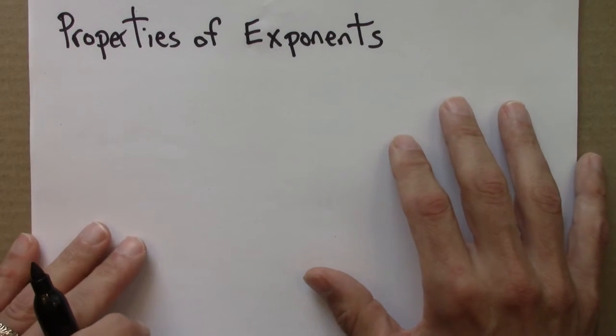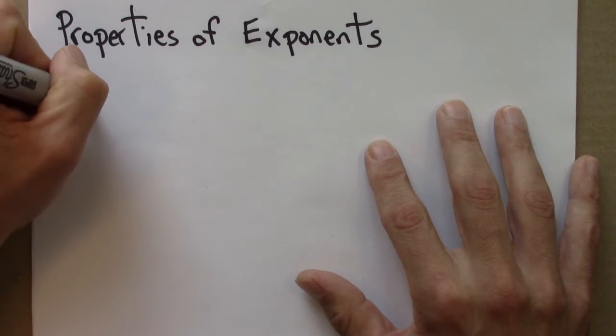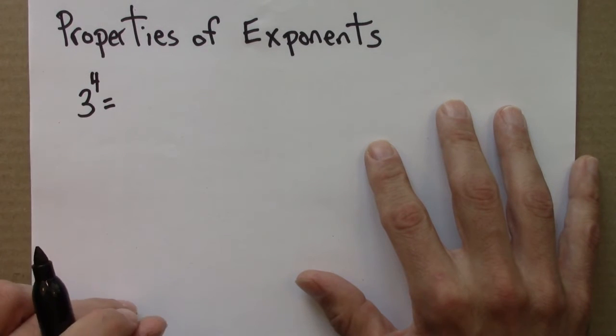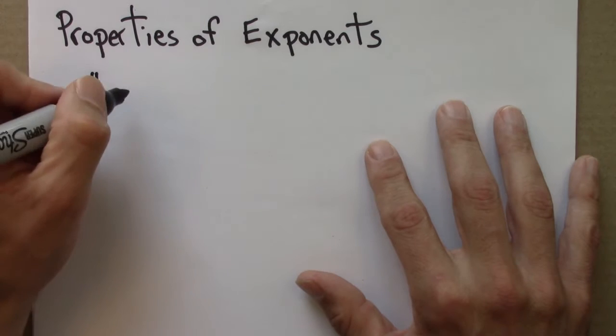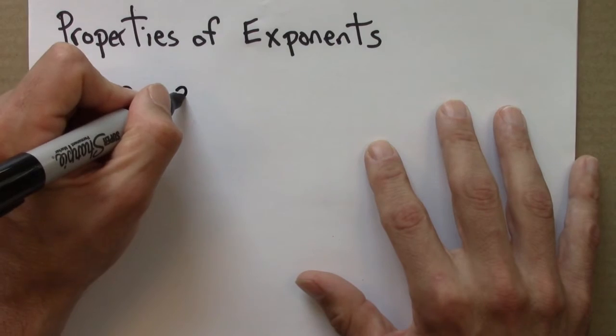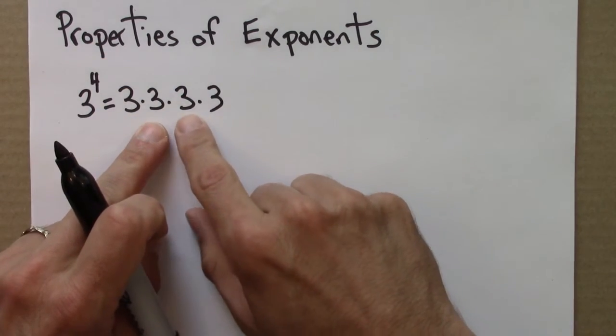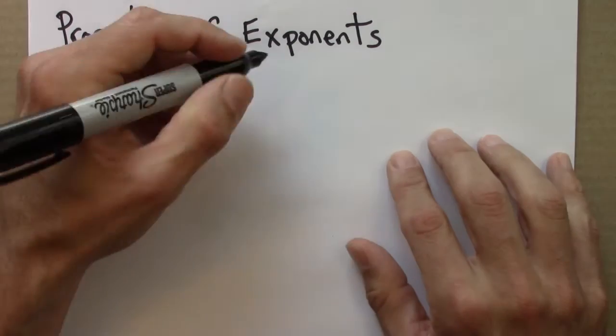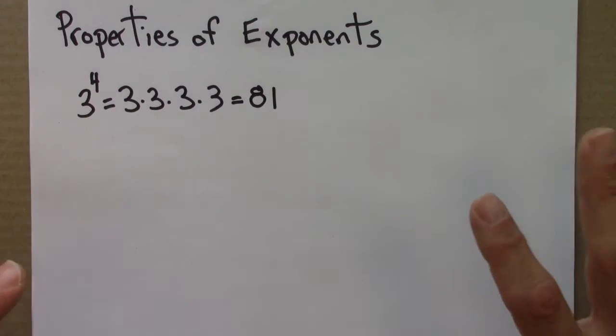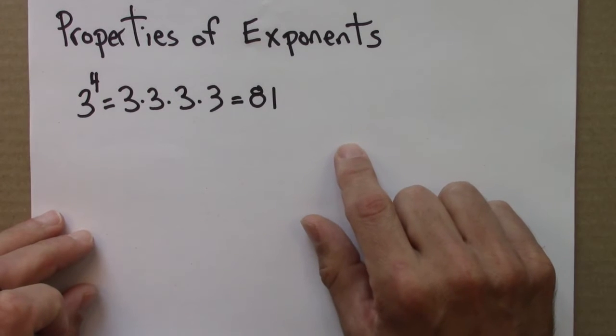An exponent, as you probably know, means successive multiplication. So for example, 3 raised to the fourth power means we take 3 and multiply it by itself 4 times. So 3 to the fourth is 3 times 3 times 3 times 3, which in this case would be 81. So as long as you remember the definition of an exponent is successive multiplication, everything else follows pretty quickly.